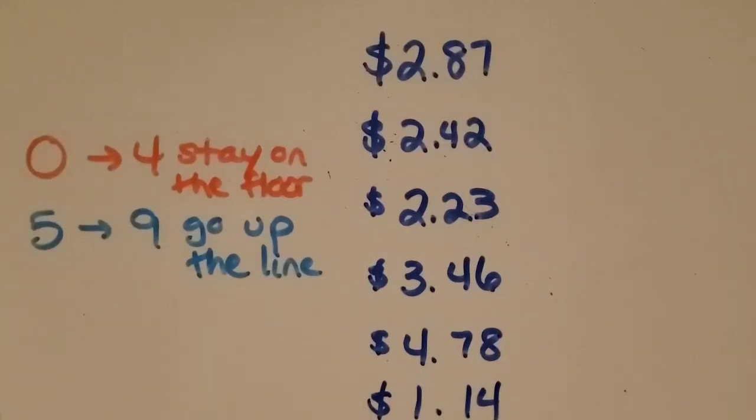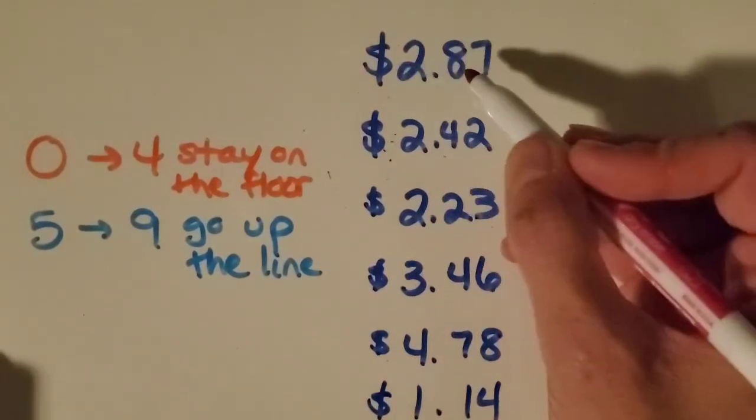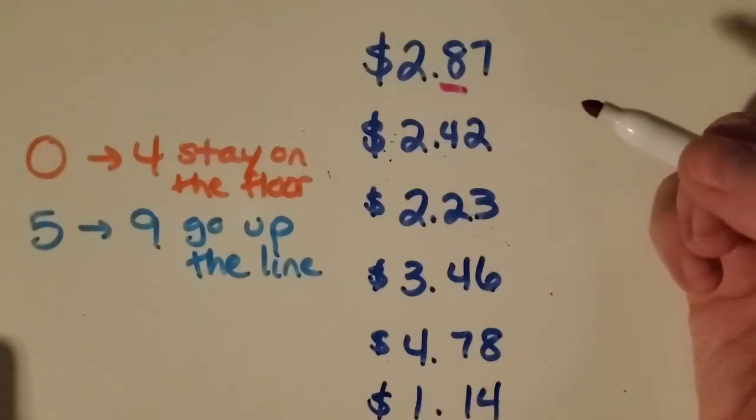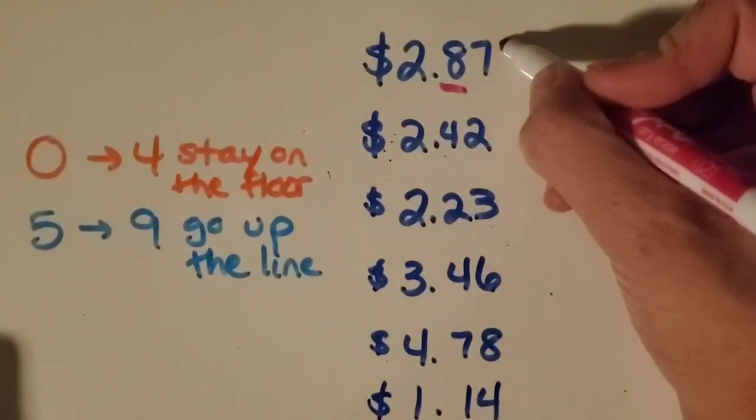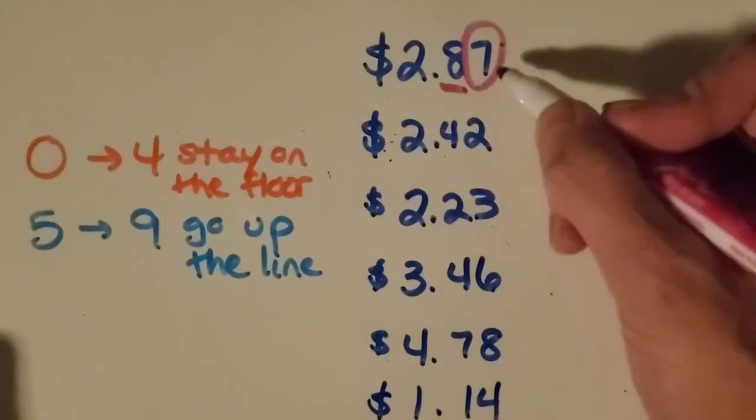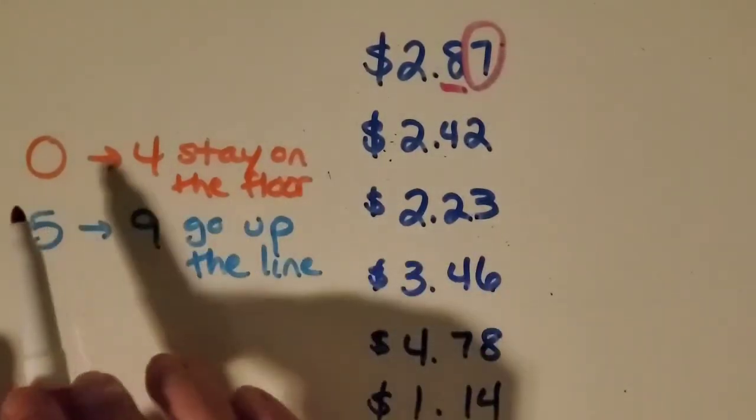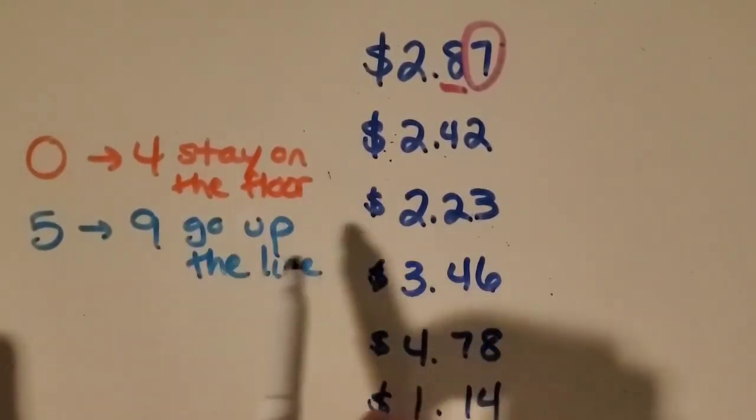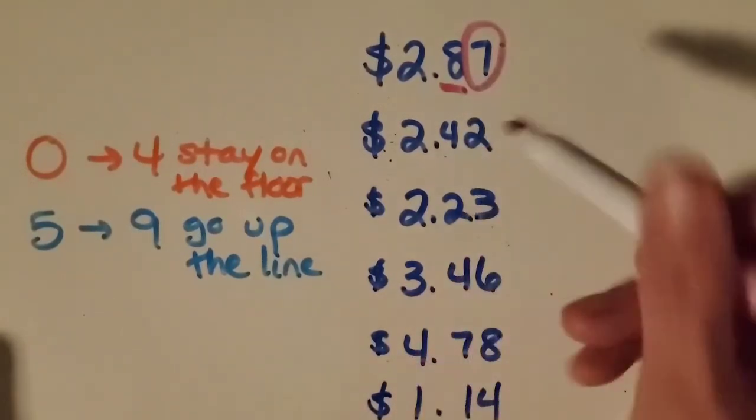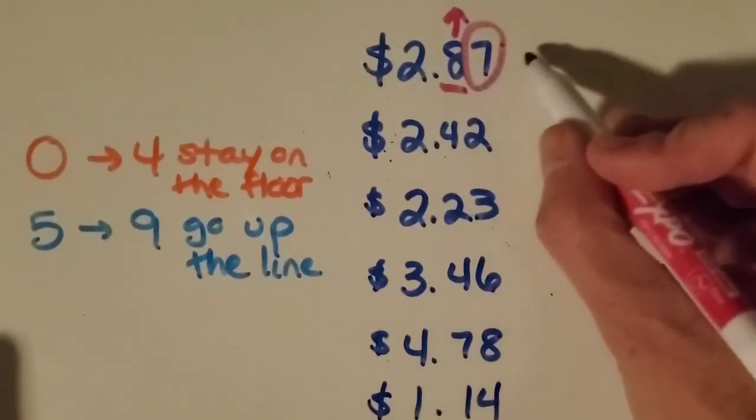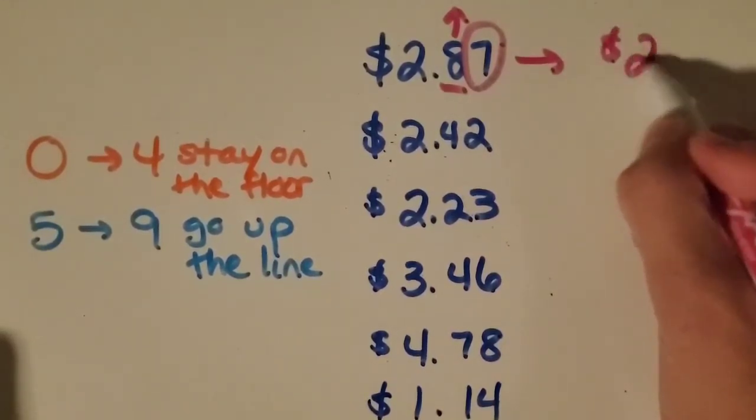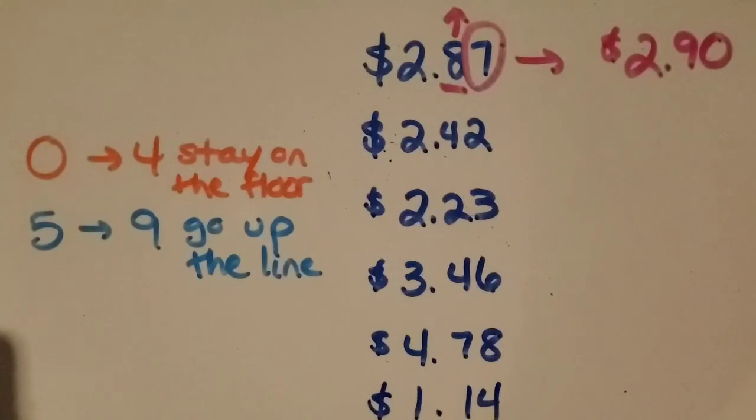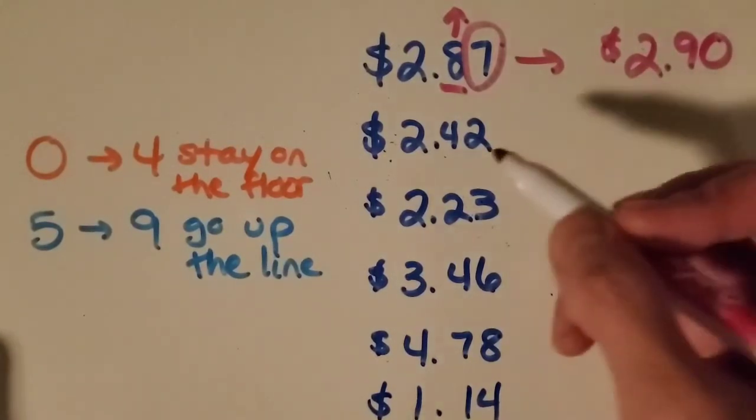Now let's help Henry out by rounding these numbers to the nearest tenths place. So I'm going to start by underlining in my first money amount. I'm going to underline the tenths place. Okay, we've had some good practice with circling the place next to it to the right. So in this case, the hundredths. Then saying our chant, zero to four, stay on the floor. Five to nine, go up the line. And it's a seven right there. So I'm going to go up the line. And that's going to round to two dollars. And you got it right. Ninety cents. Okay, let's do that with the rest.